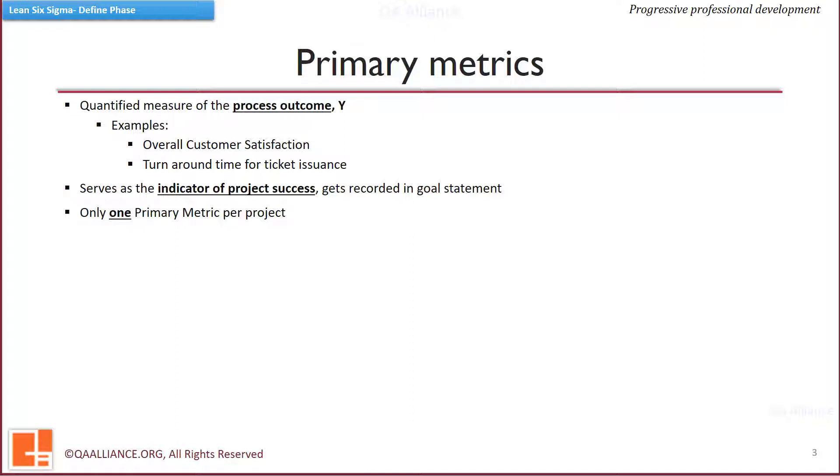Ideally, we should have one primary metric in a project, which should map to the most important CTQ. Question now comes what should be the characteristics of a primary metric.